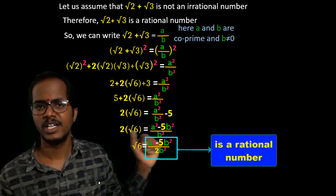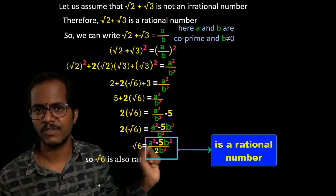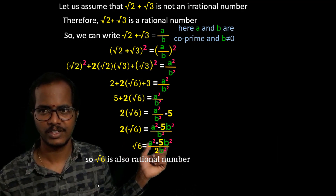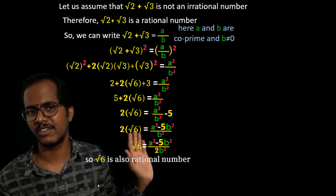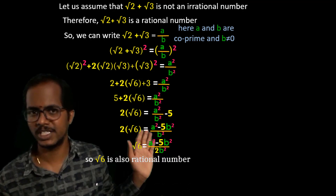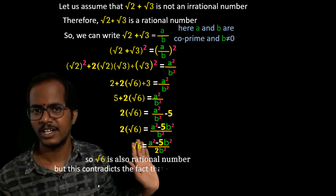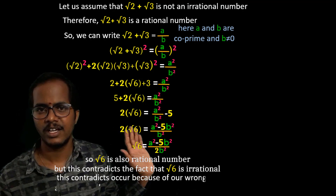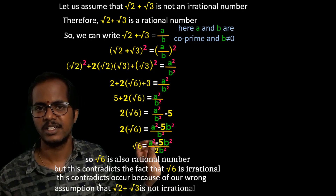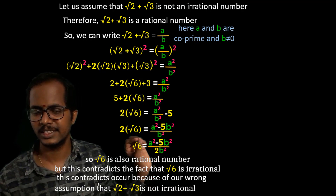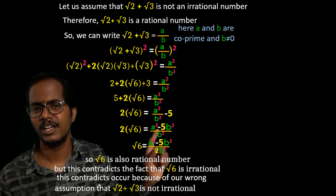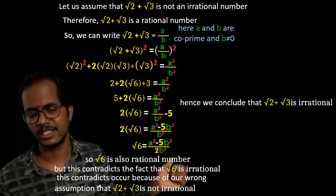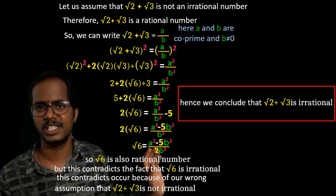If (a² minus 5b²) by 2b² is a rational number, then square root 6 is also rational. But is this true? It is wrong, since square root 6 is not a rational number. So that means we get a contradiction. This contradiction occurred because of our wrong assumption — that square root 2 plus square root 3 is not an irrational number — which is wrong. So what is right? Square root 2 plus square root 3 is an irrational number. Hence, we say square root 2 plus square root 3 is an irrational number.